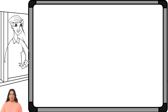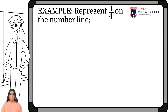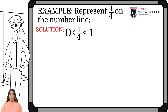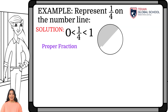Let's see a first example. Represent a fourth on the number line. We can see that it is a proper fraction since the numerator is less than the denominator. Therefore, the quotient will be greater than 0 and less than 1. Remembering previous classes, create a model of the fraction, separating the whole into 4 parts. We can see that one of the parts represents a fourth.